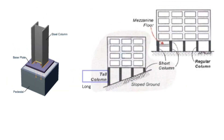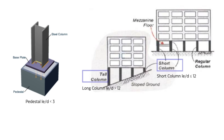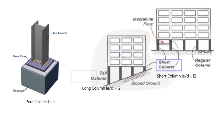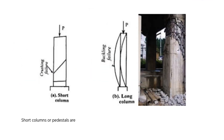There are generally three categories of columns: long columns with an LE/D ratio greater than 12; pedestals with an LE/D ratio less than 3; and short columns with an LE/D ratio less than or equal to 12, where LE is the effective length and D is the least lateral dimension — this ratio is called the slenderness ratio. Short columns are more prone to compression failure among the three types due to their inherent stiffness, failing due to material crushing rather than buckling.